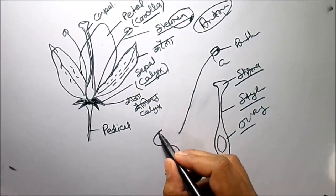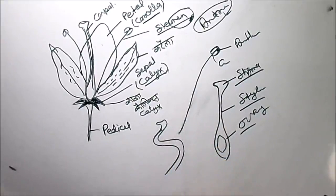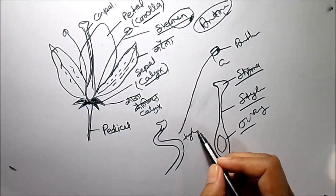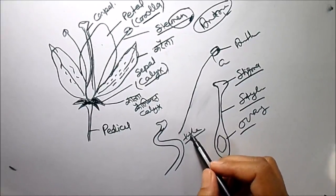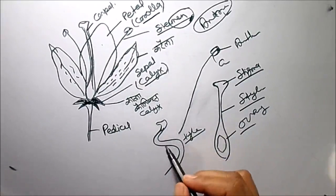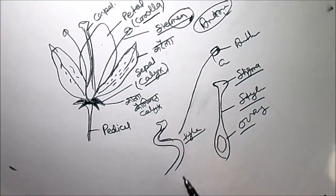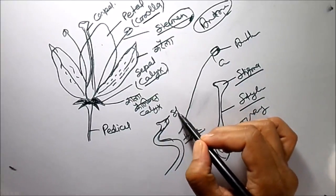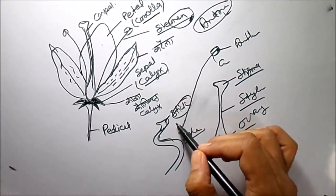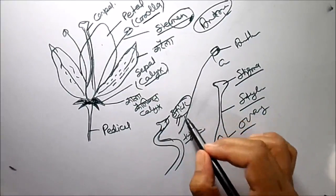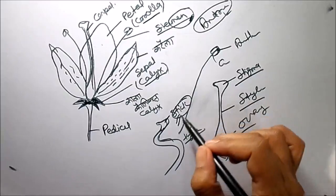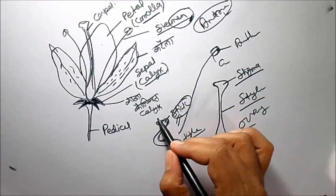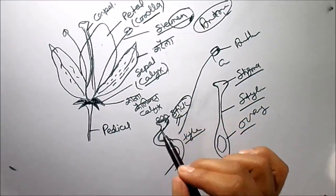We can memorize 'S4 style' — S4 style. Now the second one is stigma. Stigma — 'stick' meaning 'chippa' (sticky). From that we can memorize stigma, because here pollen grains come and because of the sticky substances they stick here.